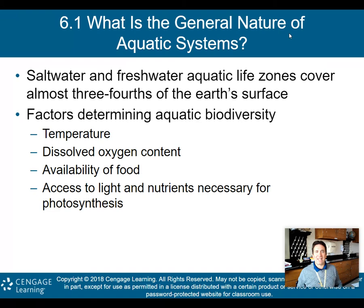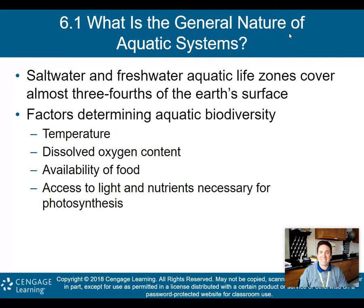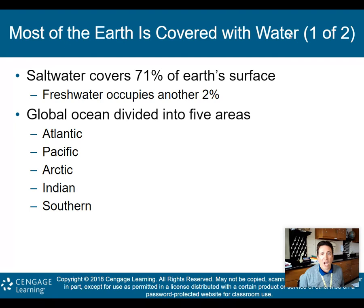Section 6.1: what is the general nature of aquatic systems? Saltwater and freshwater aquatic life zones cover almost three-fourths of the Earth's surface. The factors that determine aquatic biodiversity include: temperature of the water, dissolved oxygen content, the availability of food, access to light, and nutrients necessary for photosynthesis. Primary producers in the ocean are the base of the food chain, just like on land. Saltwater covers 71% of Earth's surface, and freshwater occupies another 2%.